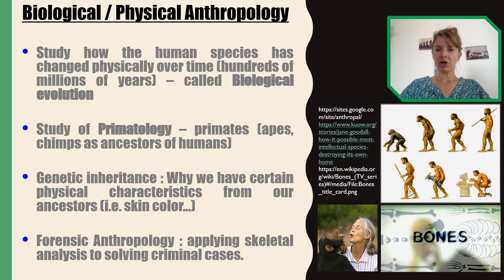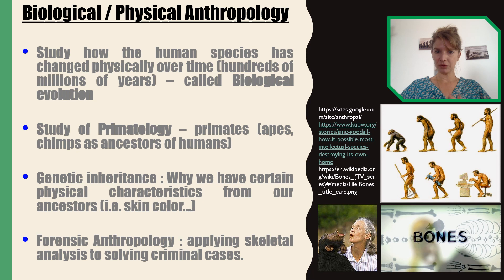Then there is what we call genetic inheritance. Biological anthropologists working in that area look into physical characteristics that humans have — skin color, eye color, hair texture, and so on — trying to understand what we inherited in appearance from previous ancestors.